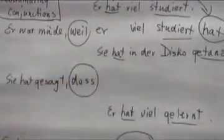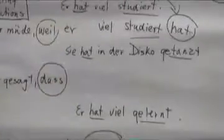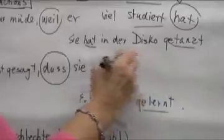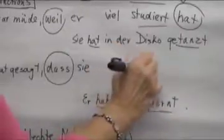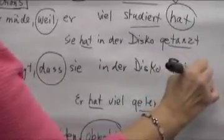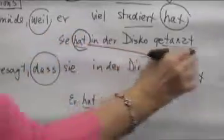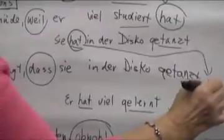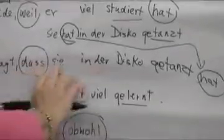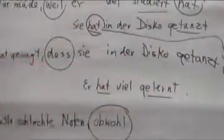Next example: 'Sie hat in der Disco getanzt' — she has danced in the disco. Now: she said that she danced in the disco. The verb comes in the regular place, then 'dass sie in der Disco getanzt hat.' The conjugated verb 'hat' goes all the way to the end. 'Sie sagt, dass sie in der Disco getanzt hat.' Nothing changes in the rest of the sentence — the only thing we are doing is grabbing the conjugated verb and sticking it at the end.